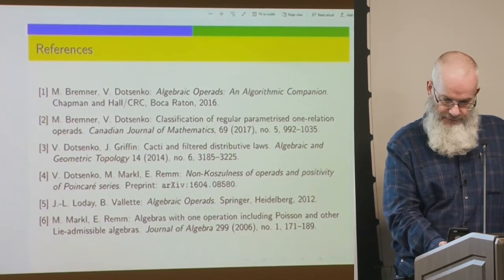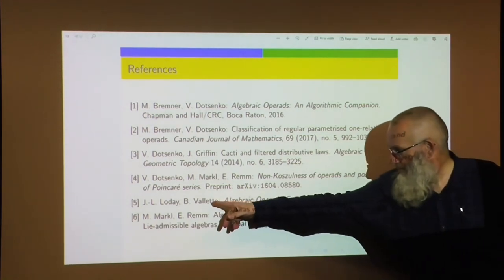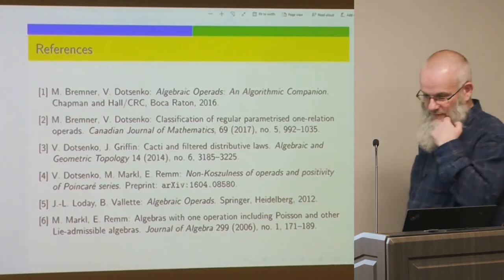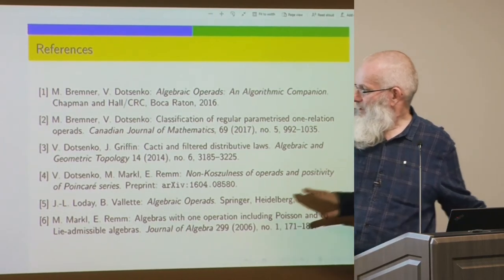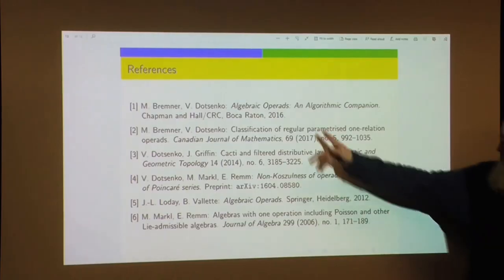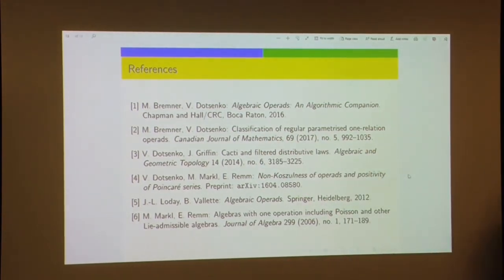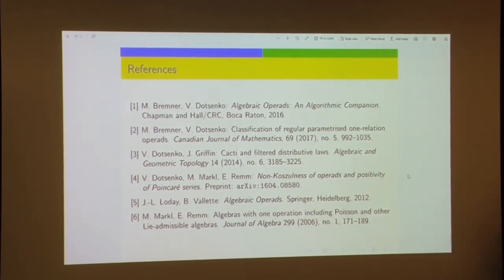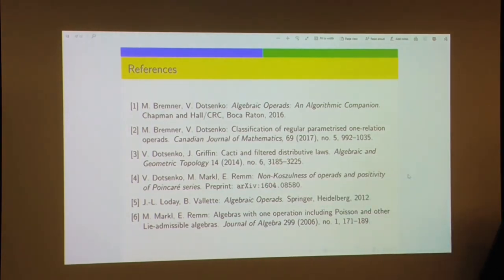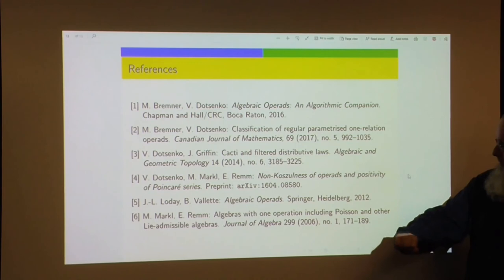That's just about it. The references are: the book by Vladimir and me — let me start with the book by Loday and Vallette on algebraic operads, which is rather intimidating even for me — higher abstract theory of algebraic operads with not too many algorithms, so Vladimir and I decided to write an algorithmic companion to that book, which appeared in 2016. There's also the paper Vladimir and I wrote that appeared in the Canadian journal, and a couple of papers proving that the necessary condition is also sufficient.